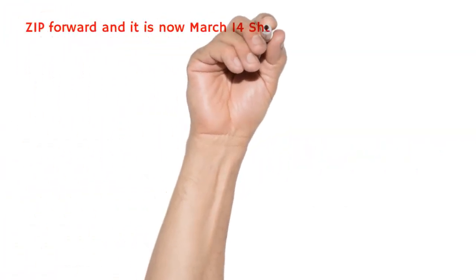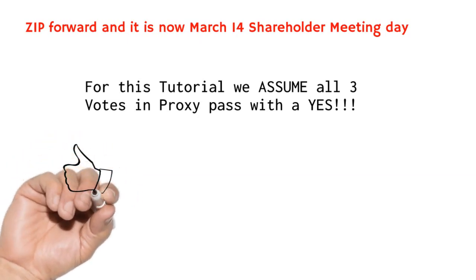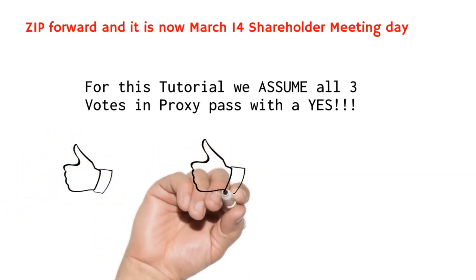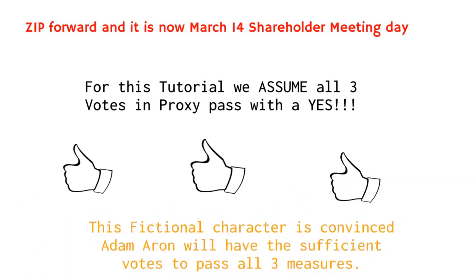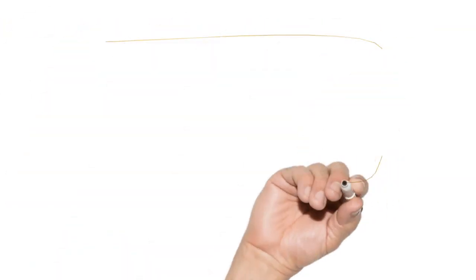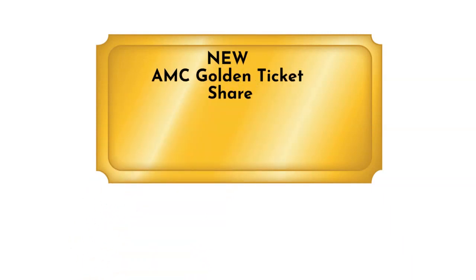For this next part of the story, we need to assume the votes at the March 14 shareholder meeting all three pass with a resounding yes. In my humble fictional character opinion, I believe Adam Aaron will indeed get the needed three yes votes. What these yes votes mean is that a couple things will happen. First, each trader's Ape and AMC shares will be converted to the new, and for this lesson we will call it the Golden Ticket AMC shares.